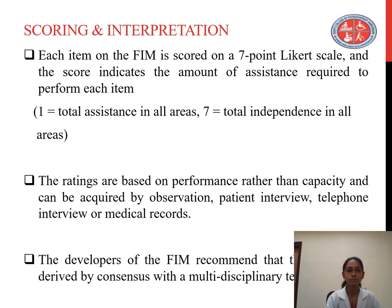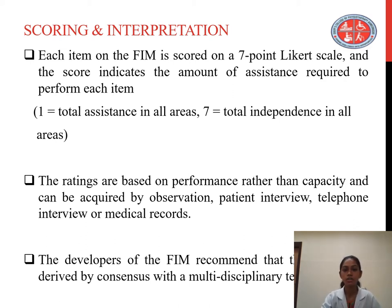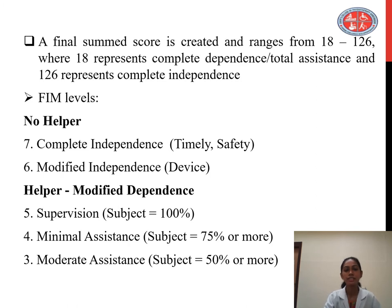Each item of the FIM is scored upon a 7-point Likert scale and the score indicates the amount of assistance required to perform each item. If the score is 1, it indicates total assistance in all areas, and if the score is 7, it indicates total independence in all areas. Ratings are based on performance rather than capacity and can be acquired by observation, patient interview, telephone interview, or medical records. The developers recommend scoring by consensus with a multidisciplinary team. The final summed score ranges from 18 to 126, where 18 represents complete dependence and 126 represents complete independence.